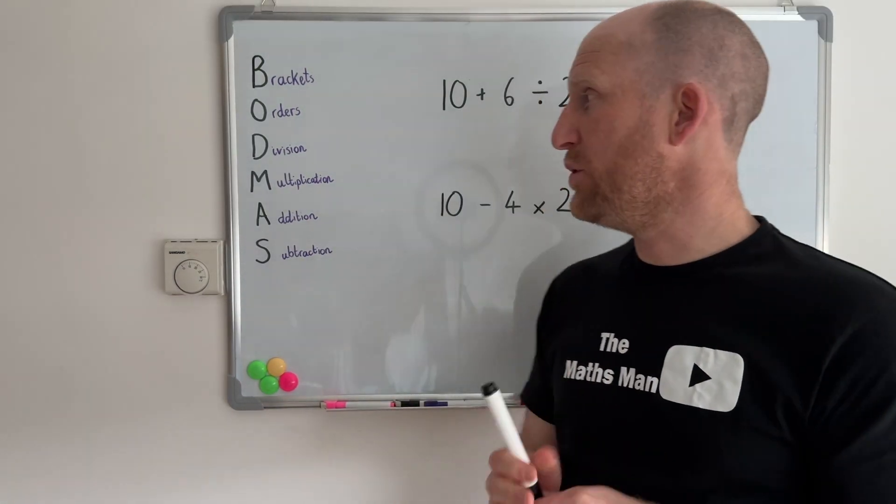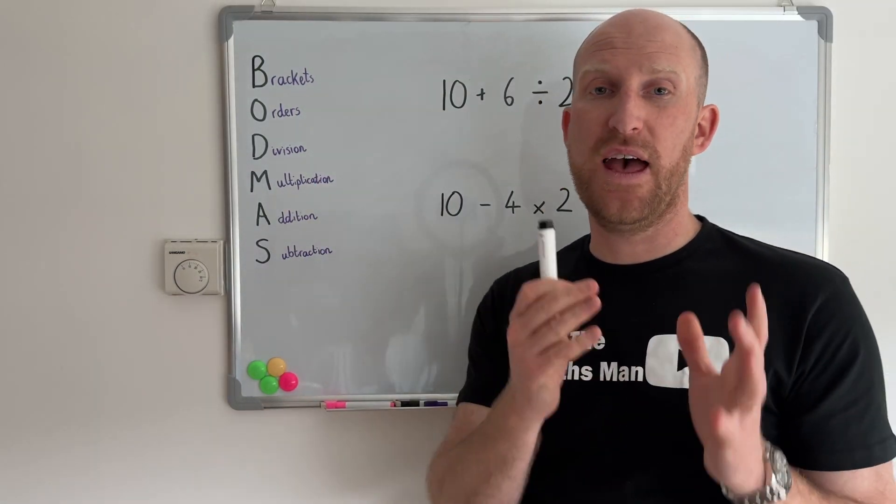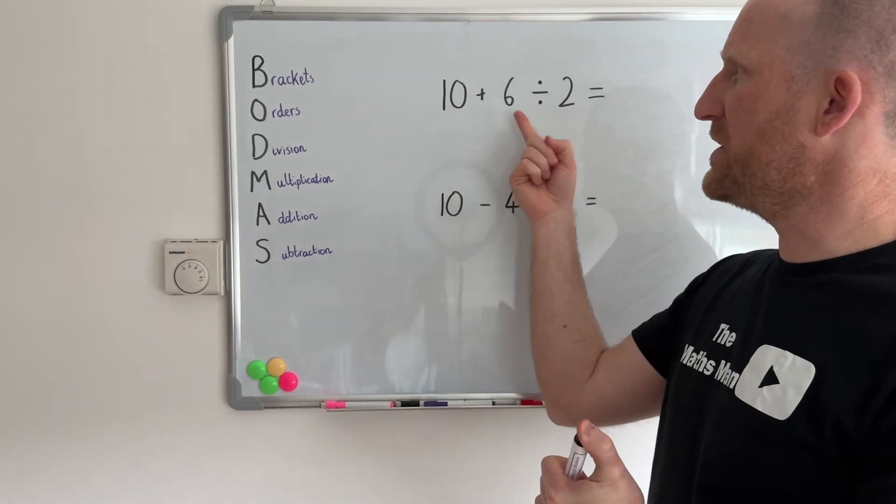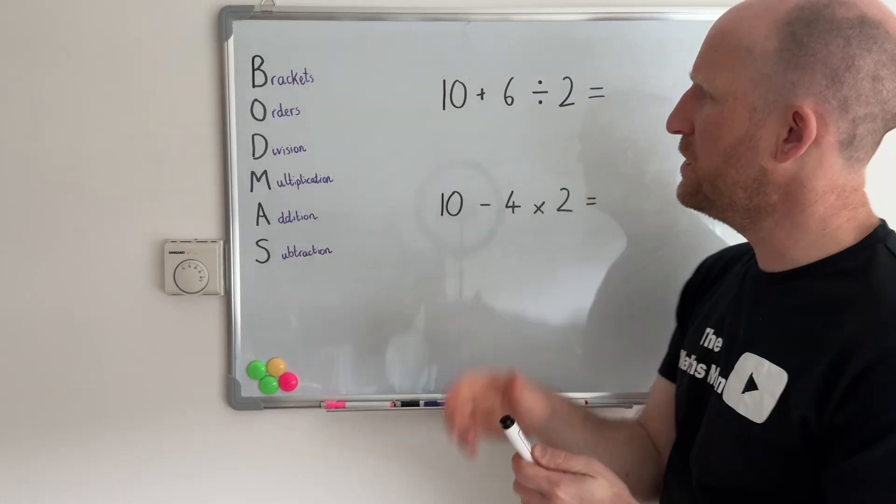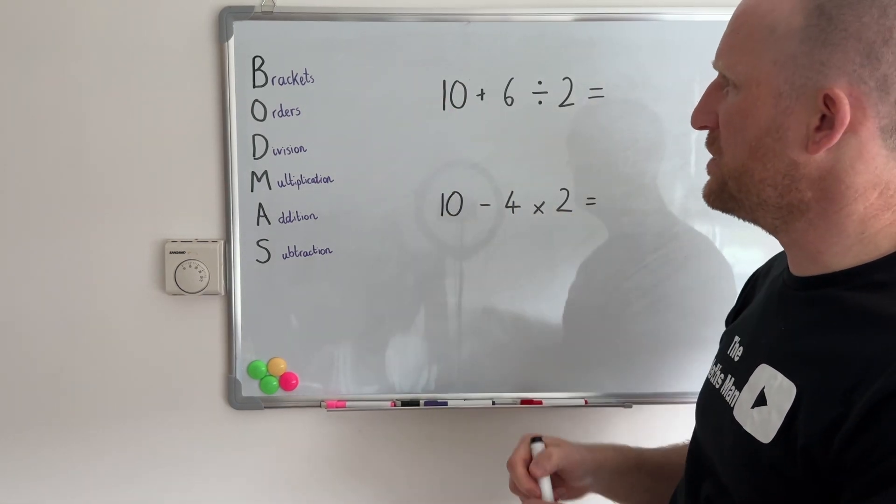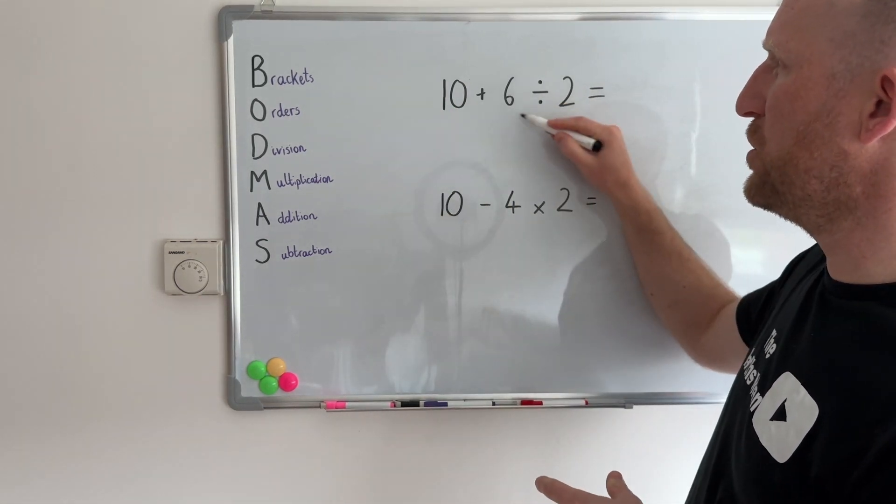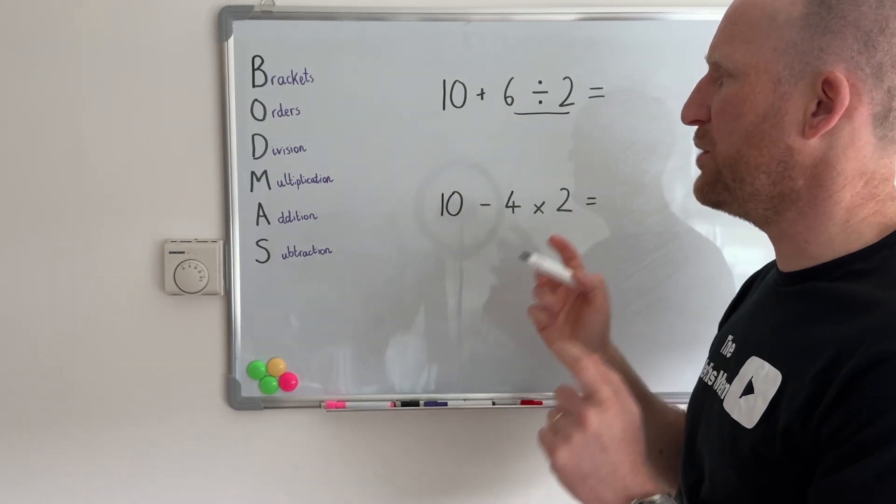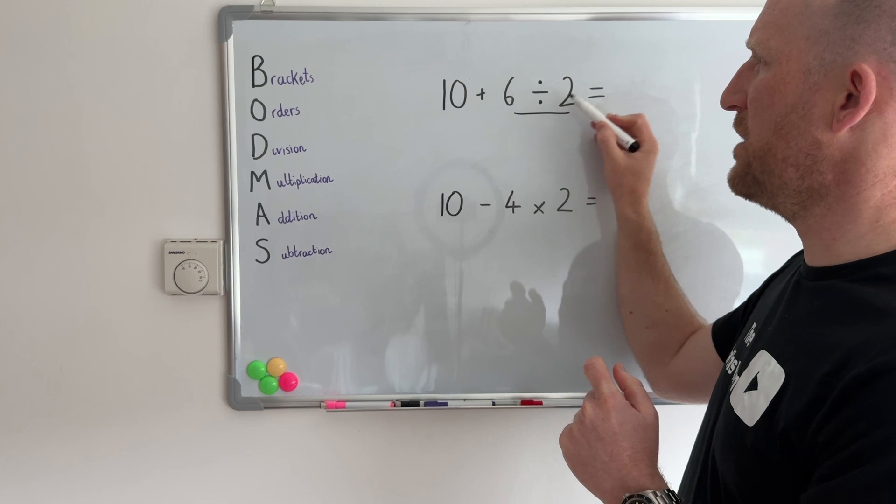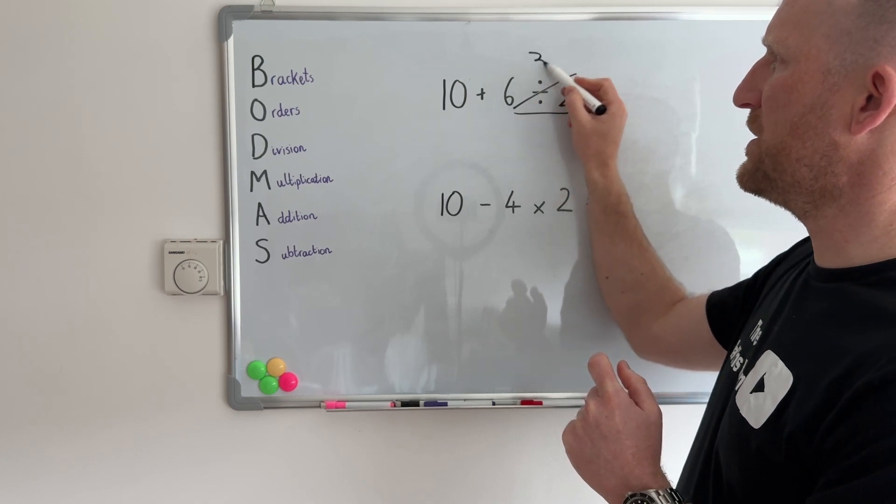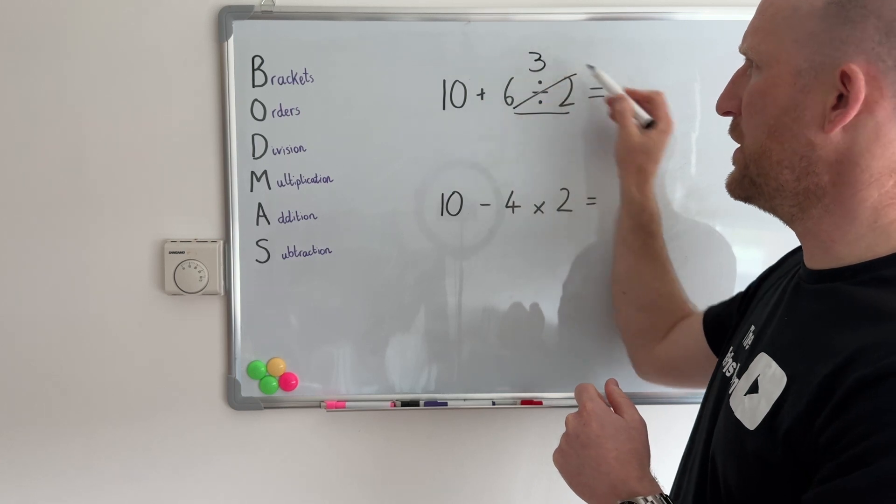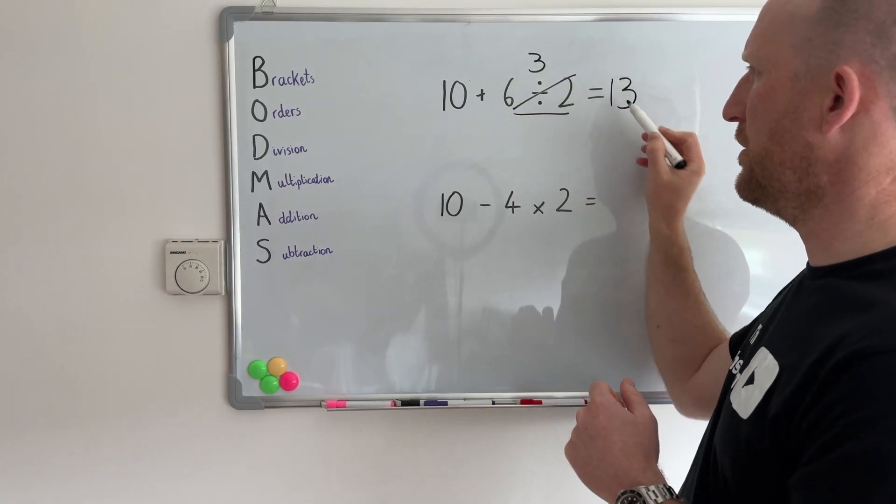In these next two examples we're going to look at the D and the M. So in this example here we have 10 plus 6 divided by 2. So BODMAS tells me that I've got to do the division part of this question first and not do 10 plus 6. So 6 divided by 2 is 3. So then I need to do 10 plus 3 makes 13.